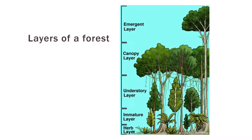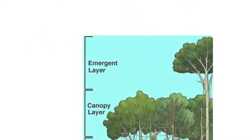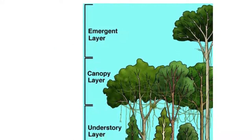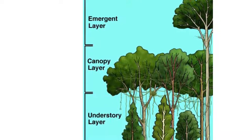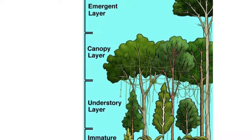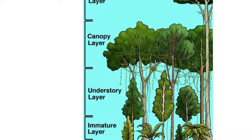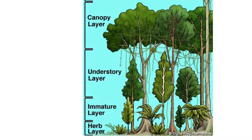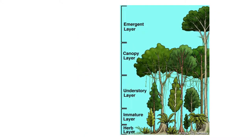In a forest, the plants or the trees in the middle are taller than those towards the edge. The reason is they are struggling to get more light, but those on the edge have enough light.